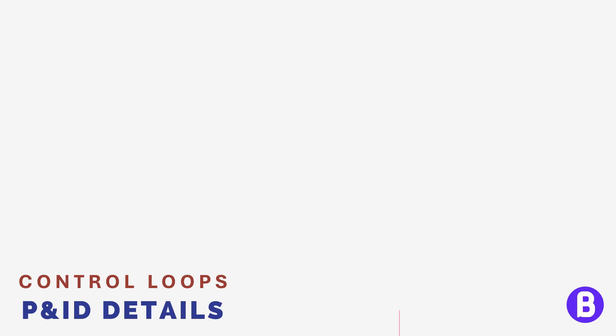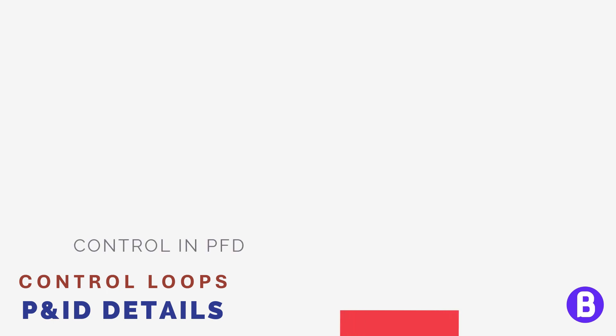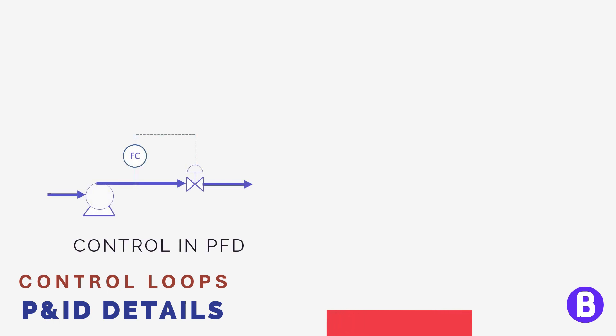After talking about instrument main details, let's move to the next components, which represent the processing of a signal received from the instrument. Let's start with control. As the PFD shows the basic control loop, the P&ID shows more details.